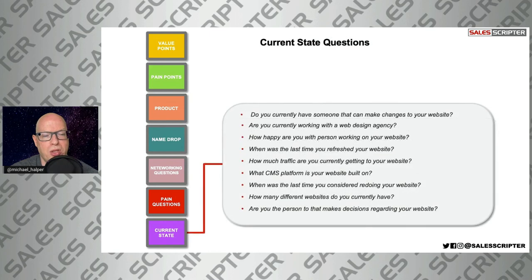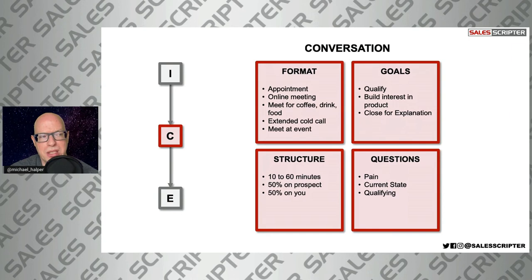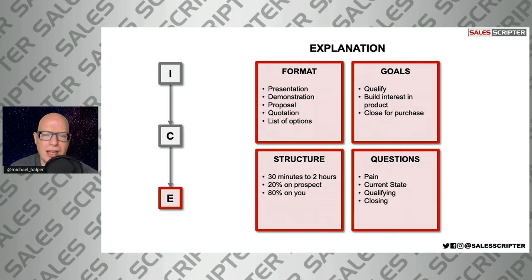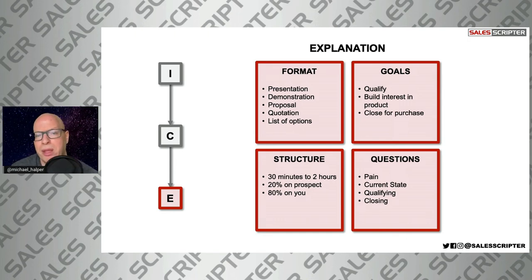In the interaction step, ask pain questions or current state questions — you can add your networking questions to that process. Once you meet someone, you might want to progress them to the conversation step, which could be meeting for coffee on another day. You meet someone at the networking event, learn about what they do, share a little about what you do, then say, 'This is a great conversation, I want to continue this — let's get together for coffee next week.' The conversation is where you learn more about them and share more about you, and can look very similar to what you do with a prospect. Then the next step is the explanation, where you would normally explain what you do through a demonstration or proposal.